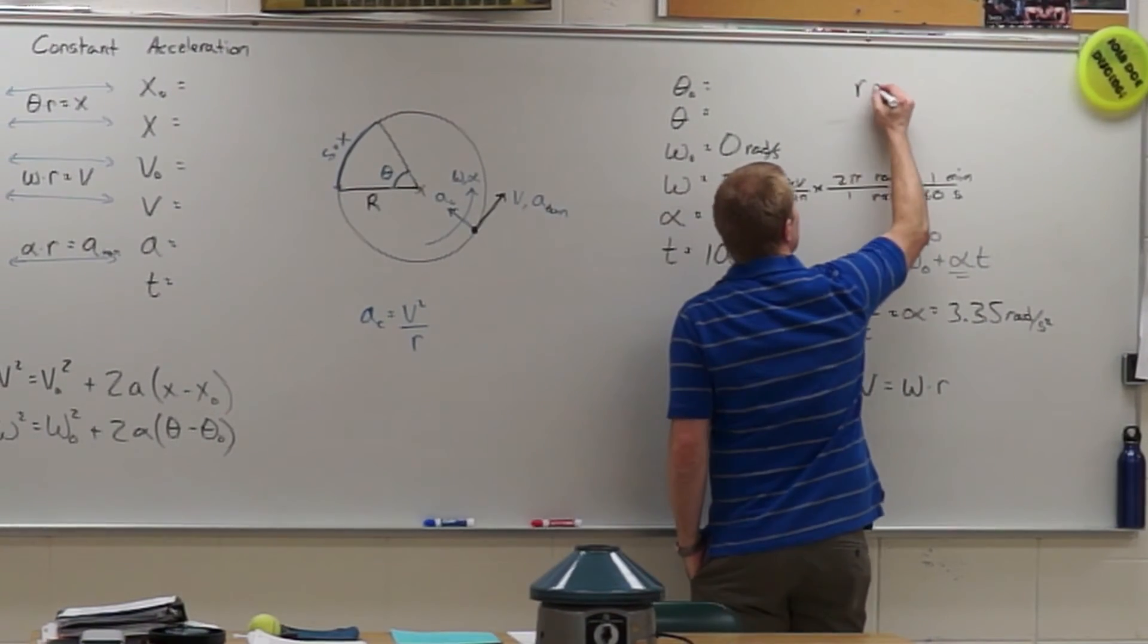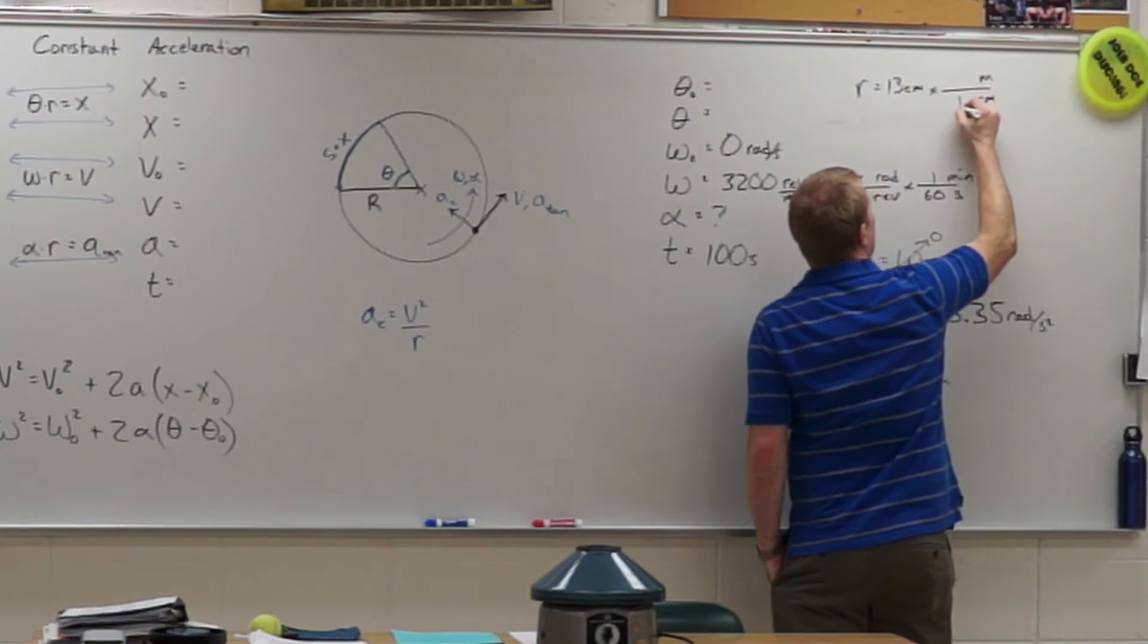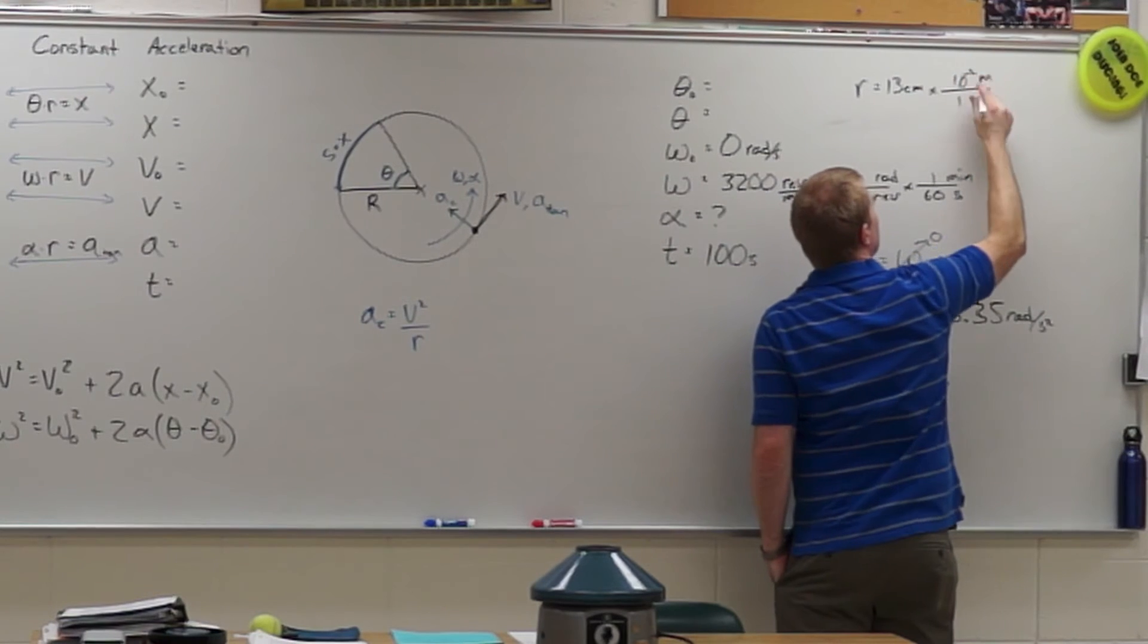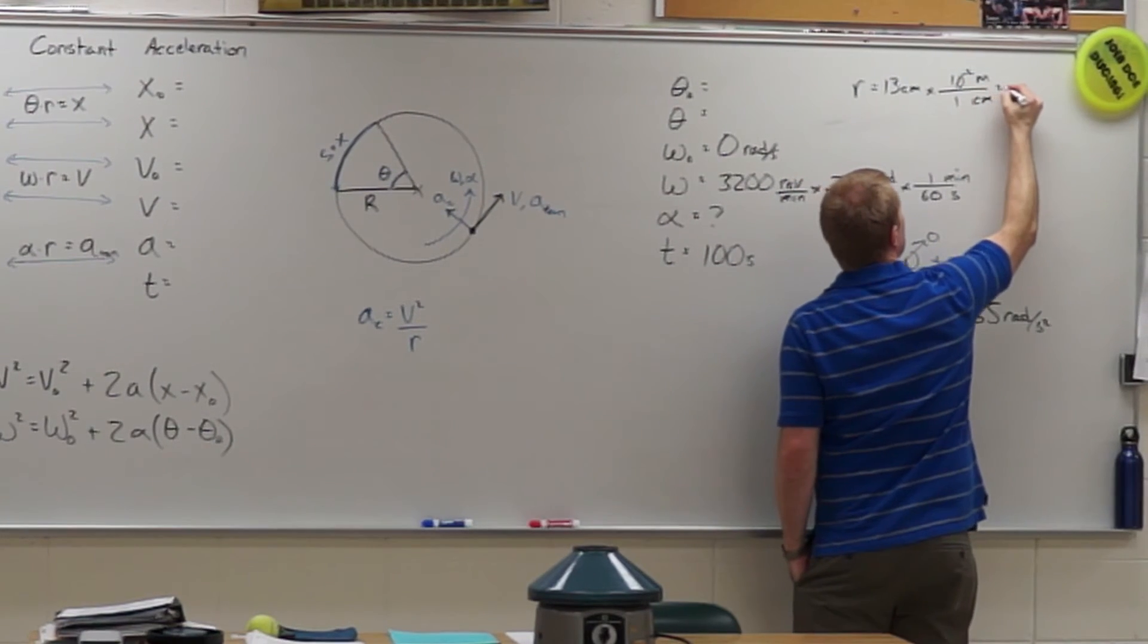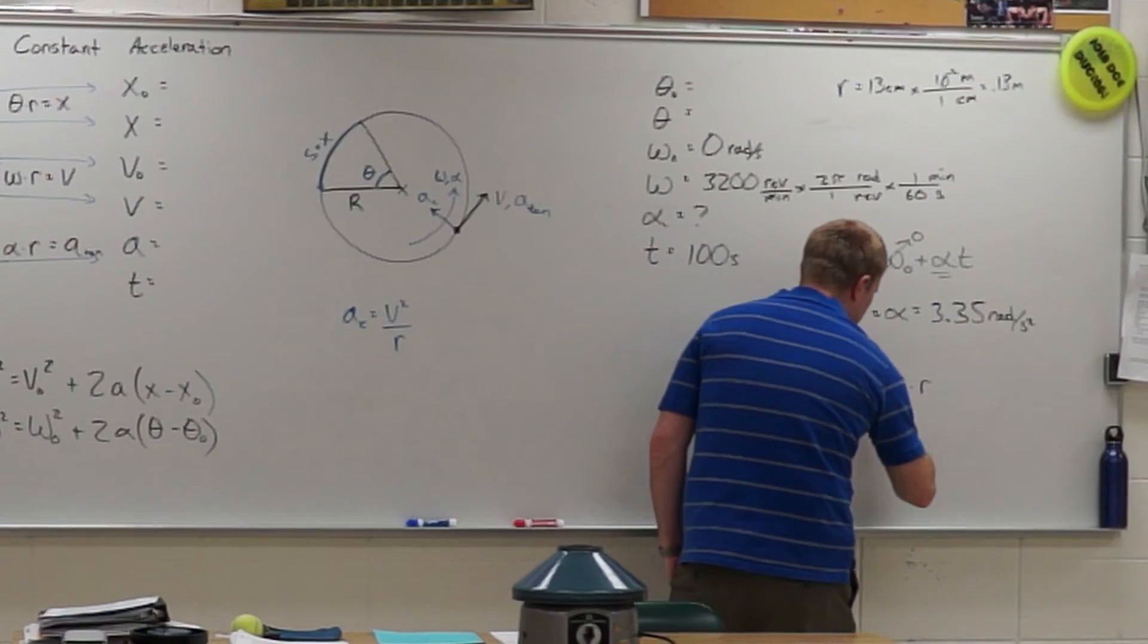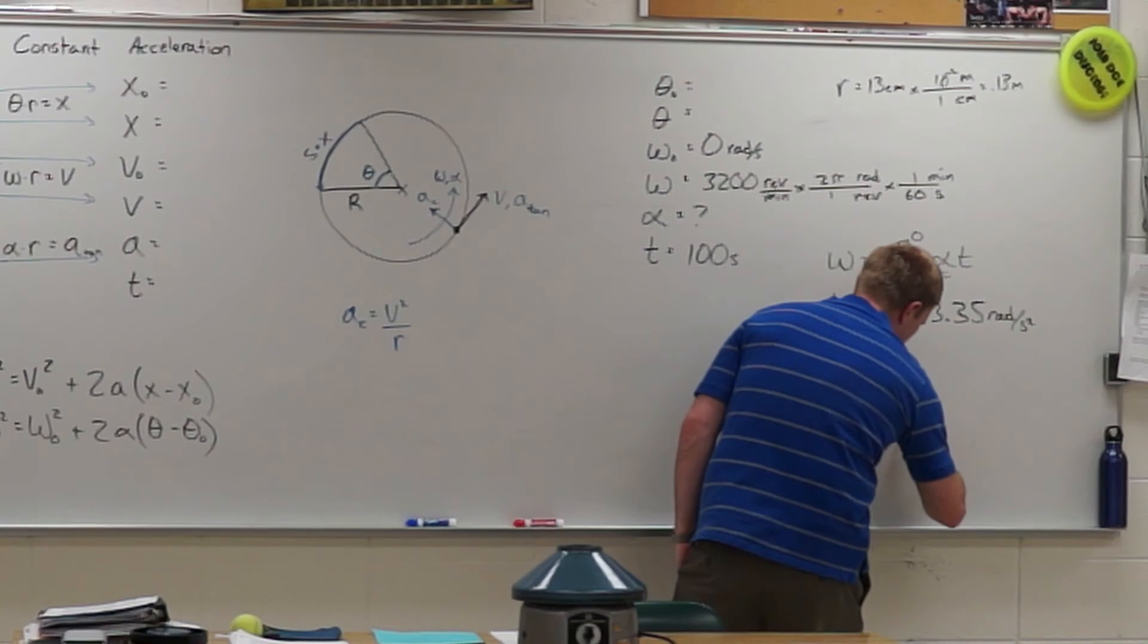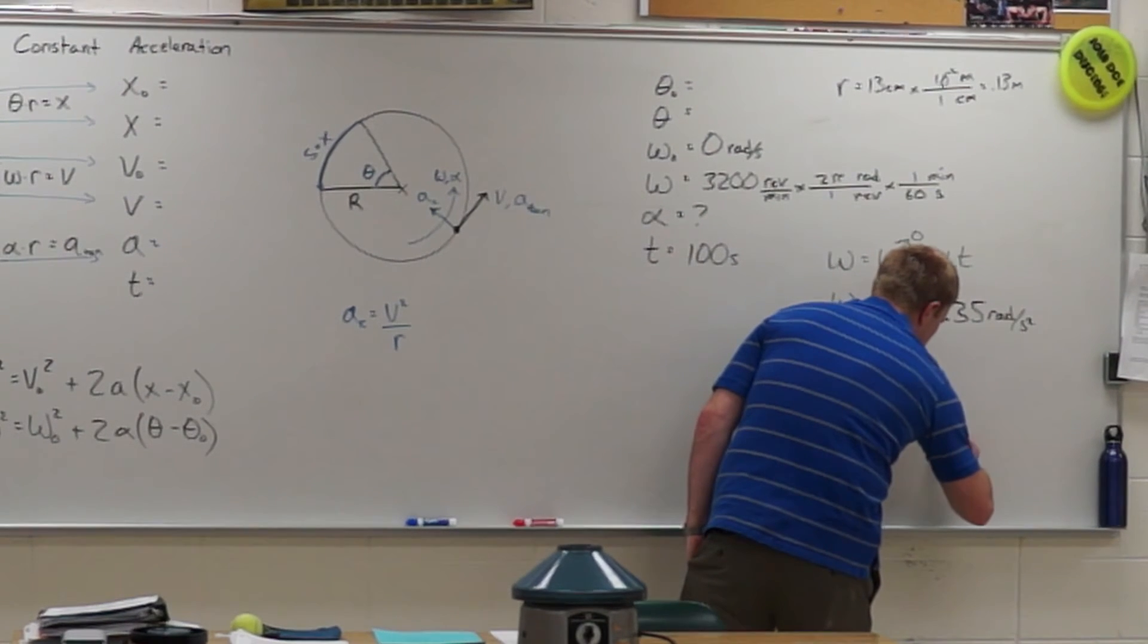So my radius, which was 13 centimeters, I am going to have to convert that from centimeters to meters. One goes with the prefix 10 to the negative 2 because top and bottom have to mean the same thing. So I get 0.13 meters. Plug that in. I find out the linear speed comes out to about 26.8 meters per second.